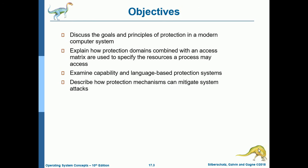The following objectives for this chapter are: discuss the goals and principles of protection in a modern computer system; explain how protection domains combined with an access matrix are used to specify the resources a process may access; examine capability and language-based protection systems; and describe how protection mechanisms can mitigate system attacks.